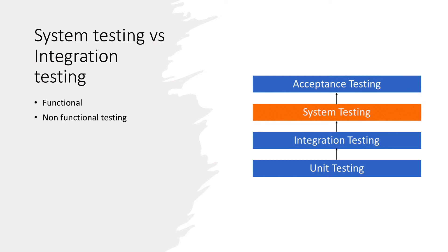Unit testing is the first level and should have the most coverage — ideally 100% coverage. There are different tools to check unit test coverage, and developers use different tools to write unit tests as well. On top of unit testing we should have integration testing, also with maximum coverage. After that we do system testing, where we test the whole system, and then acceptance testing.